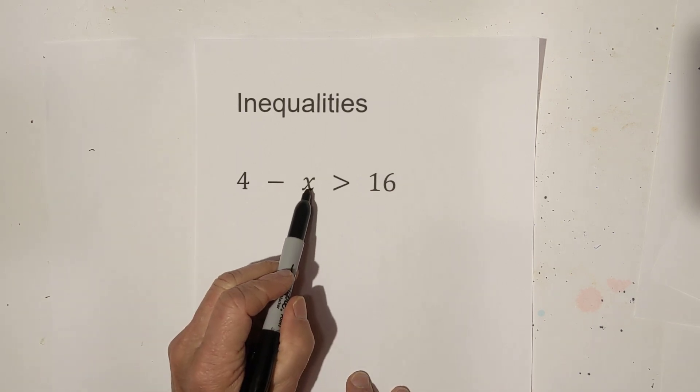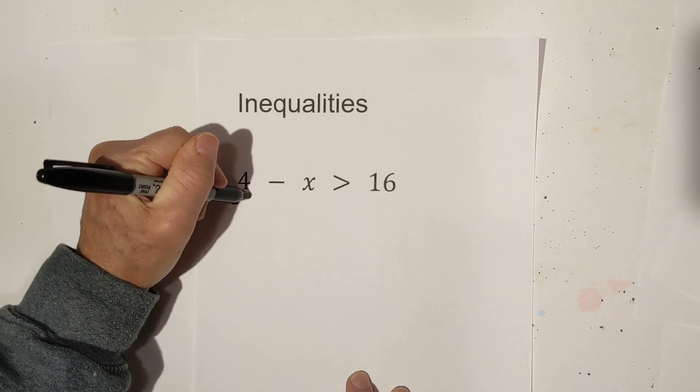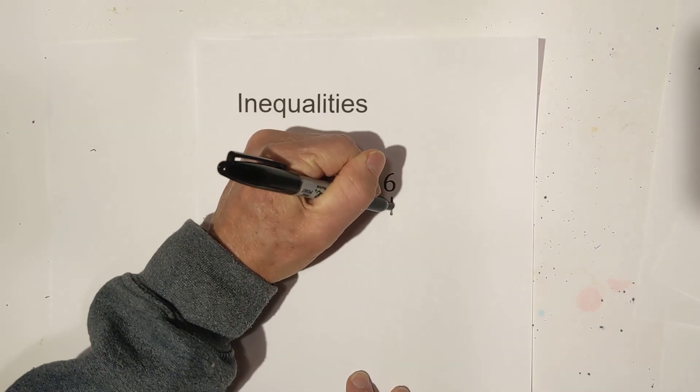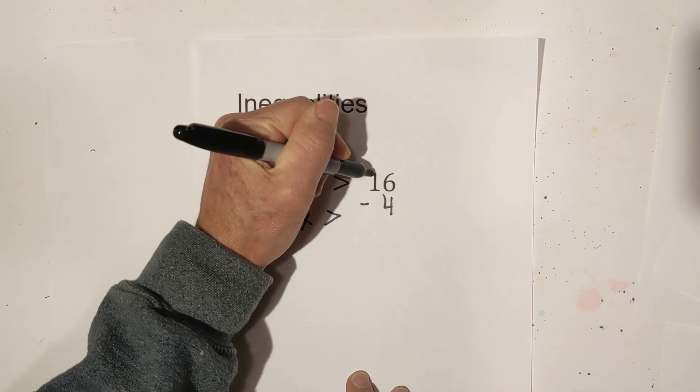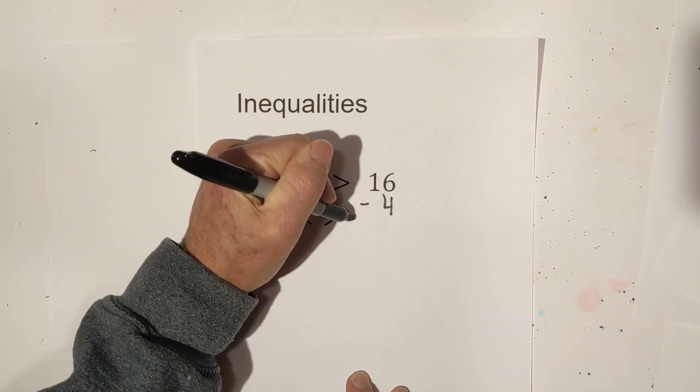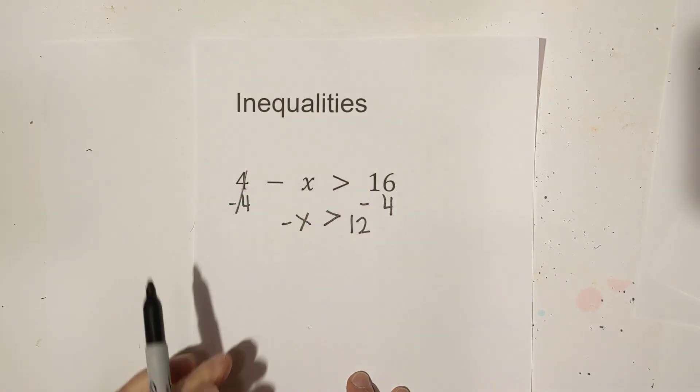We're going to begin. We need to isolate the x so we're going to subtract 4 from both sides. These cancel. You bring down a negative x is greater than 16 minus 4 is 12. Keep the sign of the larger number so it's a positive 12.